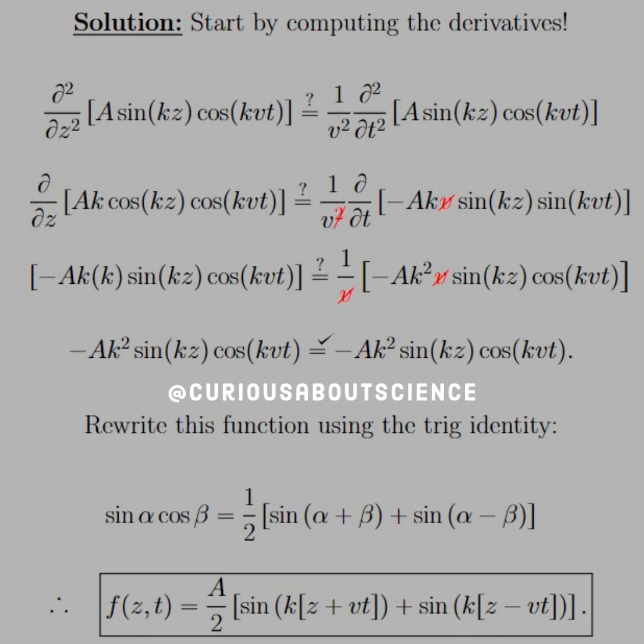And with that, if we're clever, what we notice is that both α and β - since α = kz and β = kvt - both have a k term. We factor that out in both of them and we're left with k(z + vt) and k(z - vt). And this is what our general solution looks like.